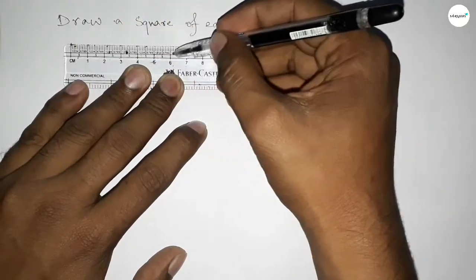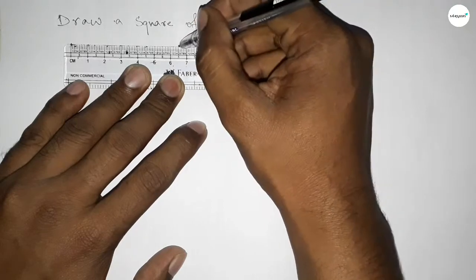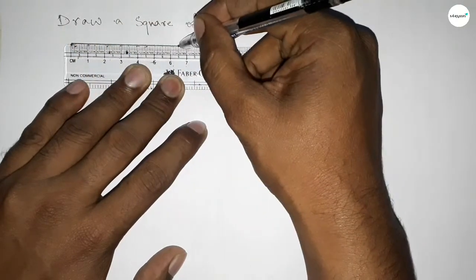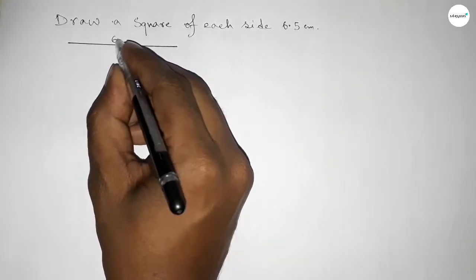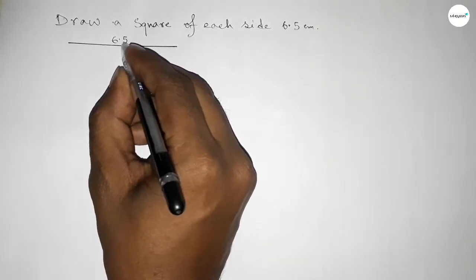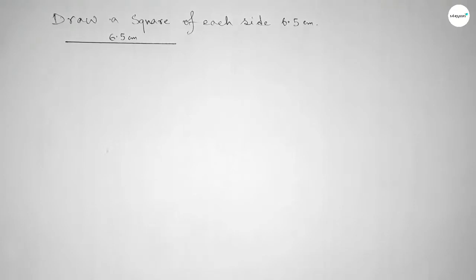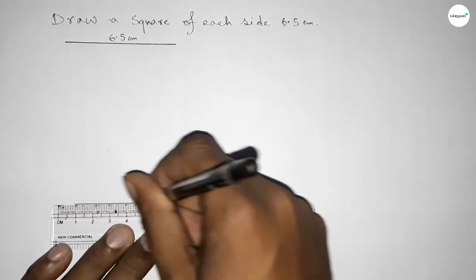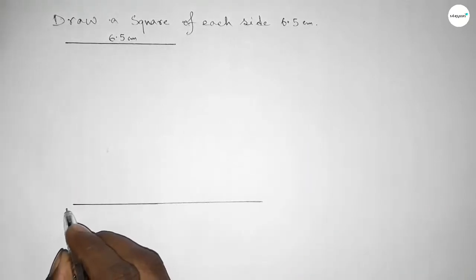First, we draw a length of 6.5 centimeters — marking 0, 1, 2, 3, 4, 5, 6, and 6.5. So first draw a length of 6.5 centimeters. Next, we have to draw a straight line of any length.